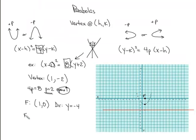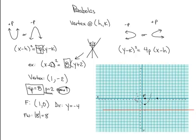The parabola spans 8 units across when measured through the focus, which means 4 units to each side of the focus. From the focus, I go right 1, 2, 3, 4 units, and left 1, 2, 3, 4 units. Connecting those points to the vertex gives the actual parabola. There's no need for a table of values — there's our parabola.